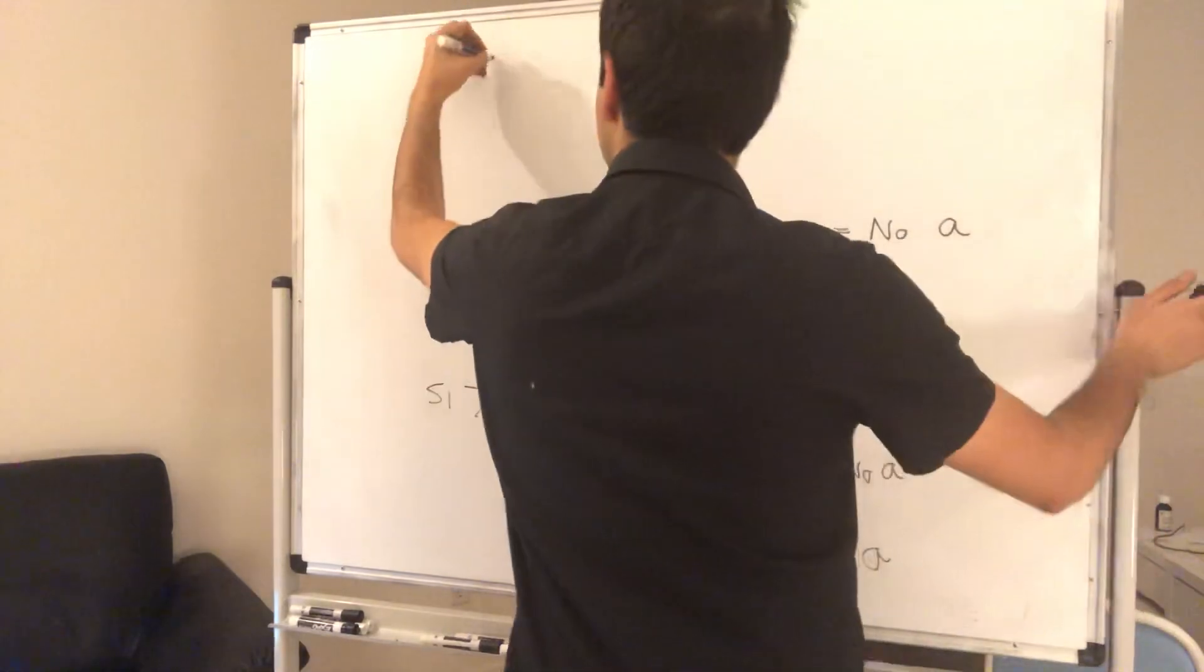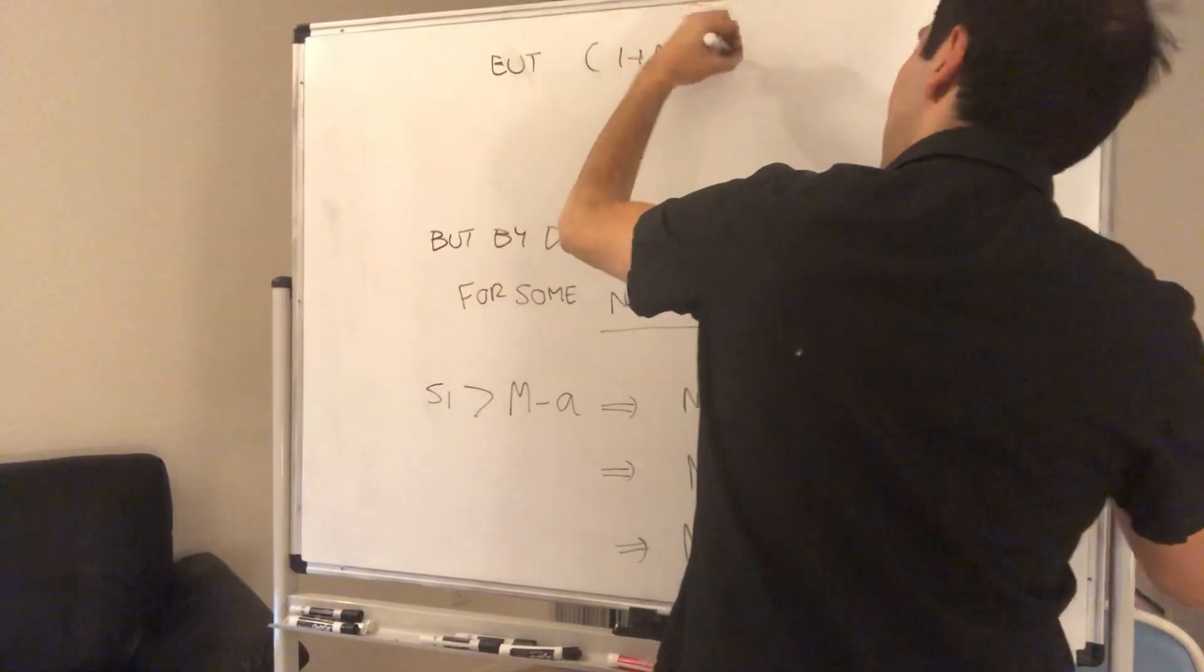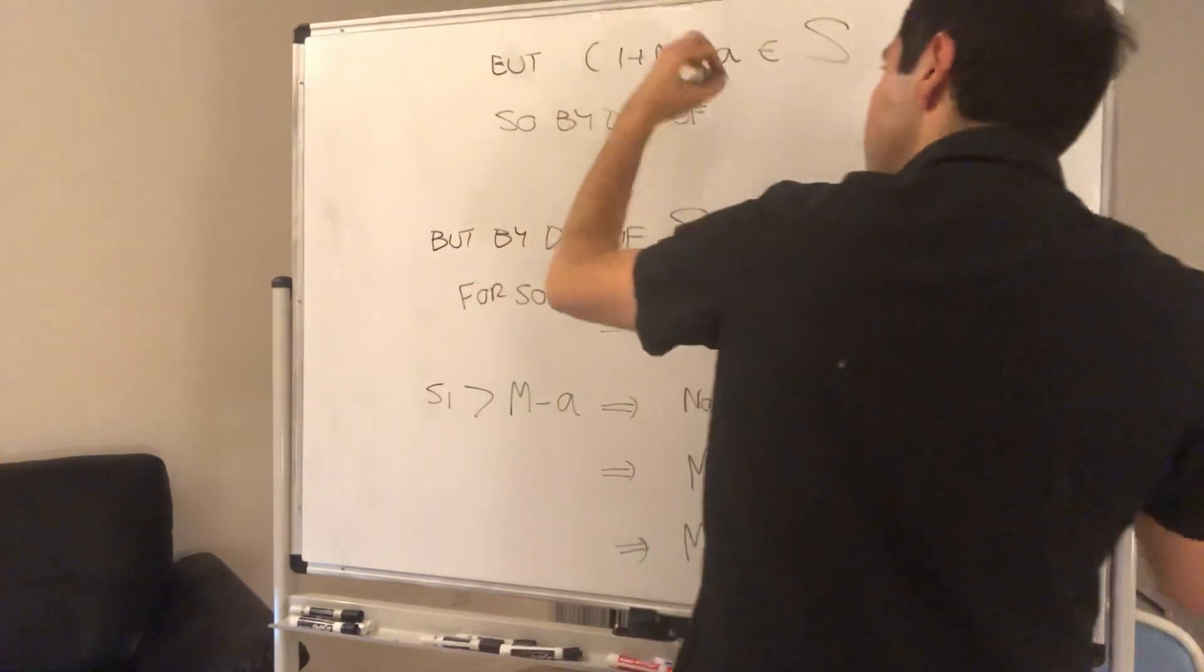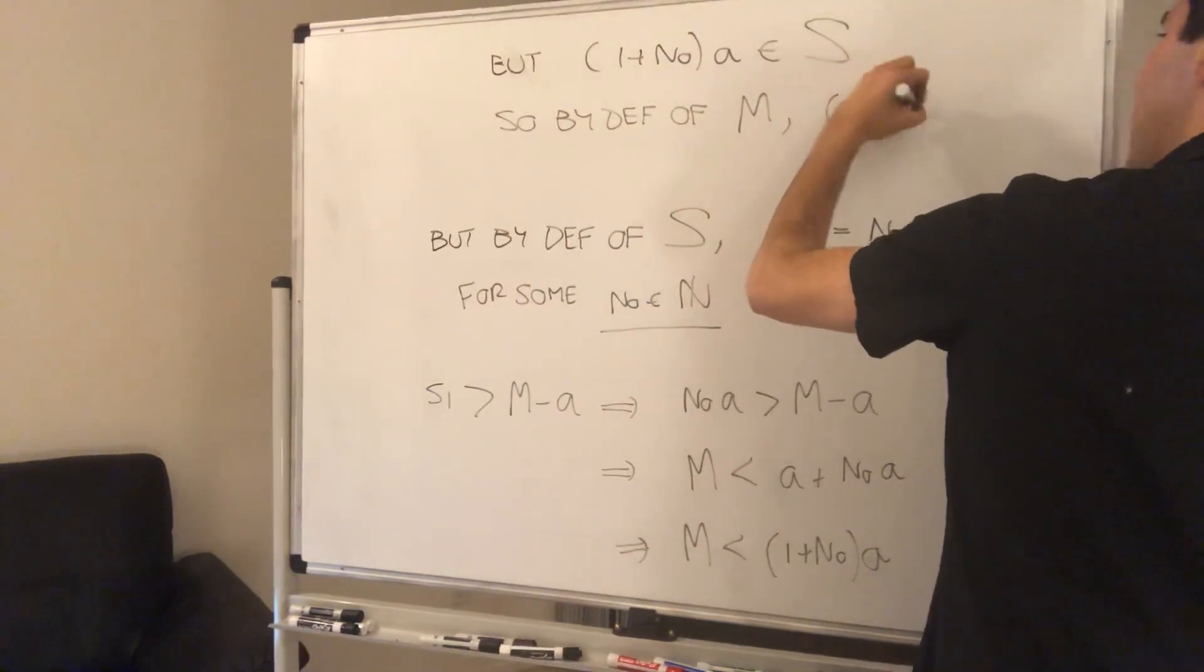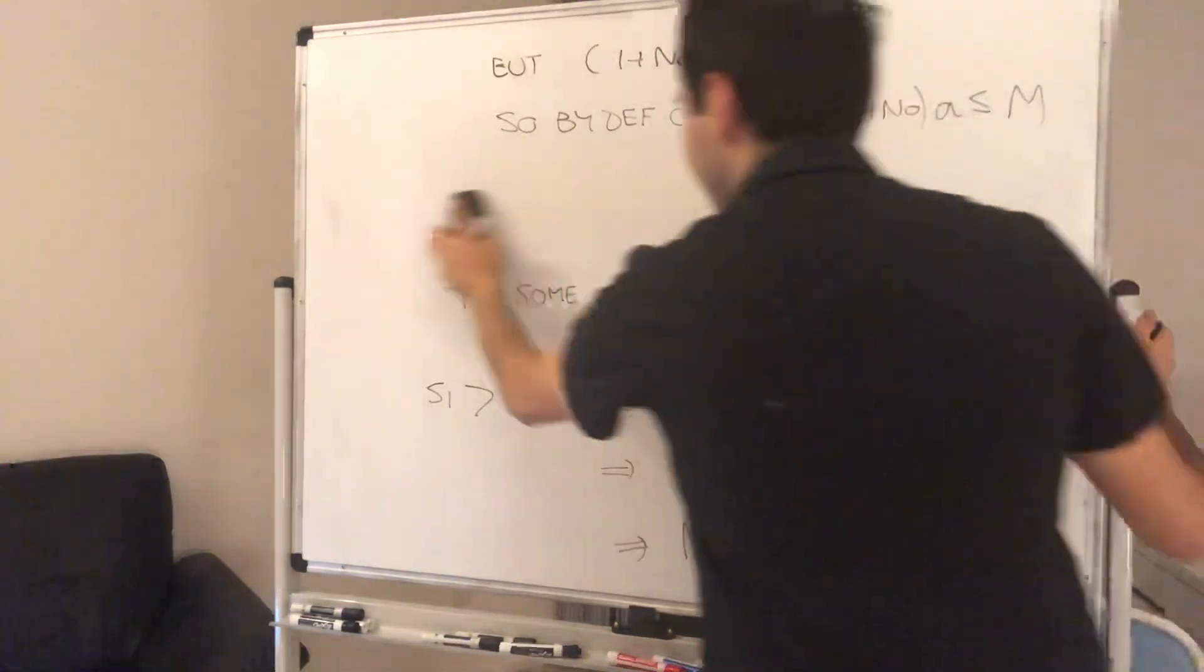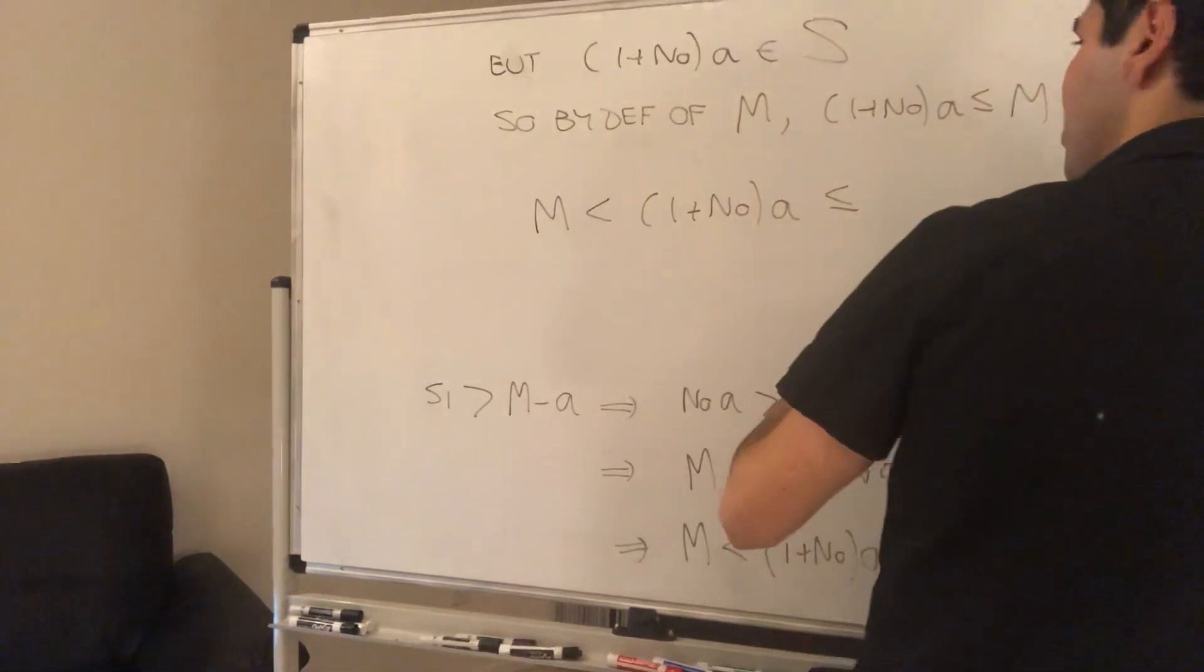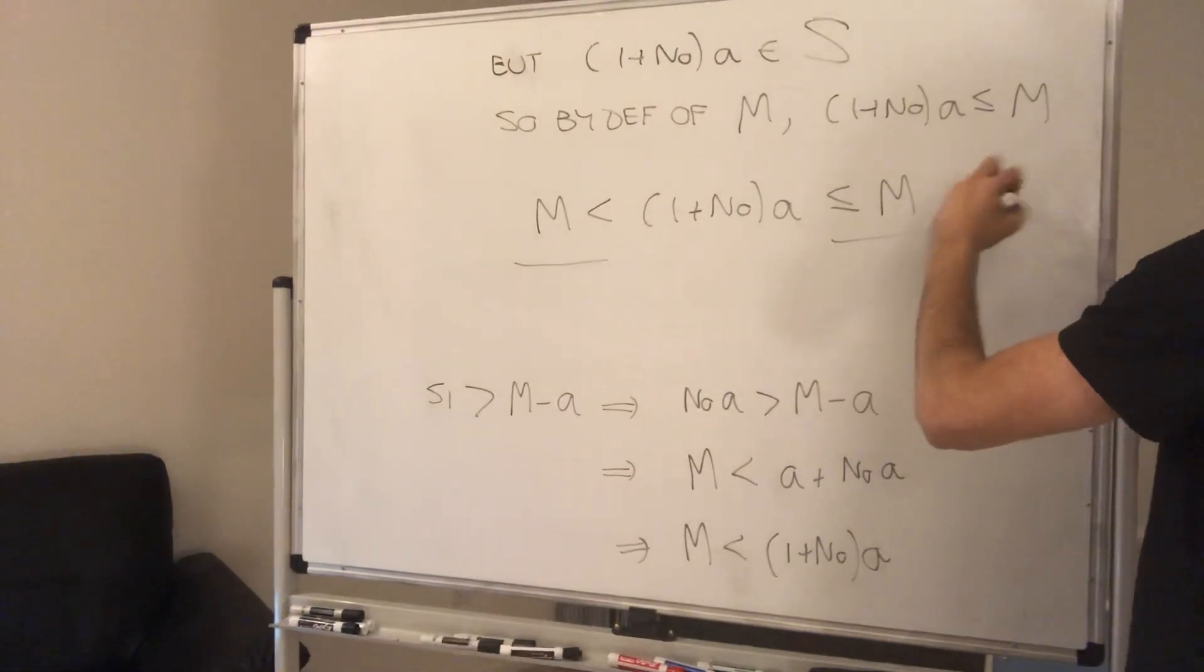But the point is, 1 plus n naught A is a multiple of A, is in S. So by definition of M as the supremum, it's an upper bound. We have 1 plus n naught A is less than or equal to M. And therefore, we get M is less than 1 plus n naught A, and that's less than or equal to M. So M is strictly less than M, and that's our contradiction.